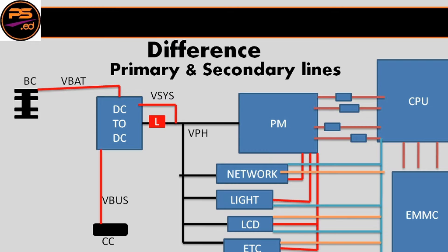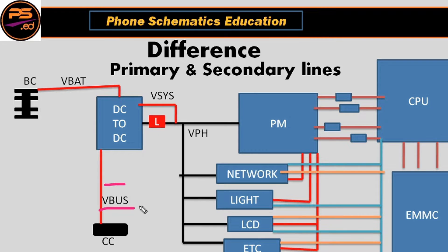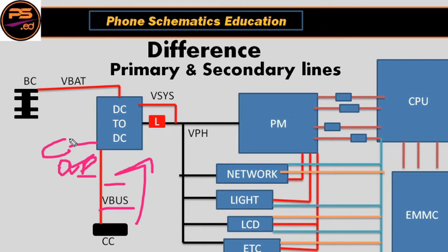In front of you there is a diagram — please look at the circuit carefully so you can understand the difference between primary and secondary line easily. This is the V-bus line, or charging line, going from the charging connector to the DC-to-DC IC. In this line we have an OVP IC first, then the line goes to the DC-to-DC IC, also called the charging IC. In this line you get 5 volt.